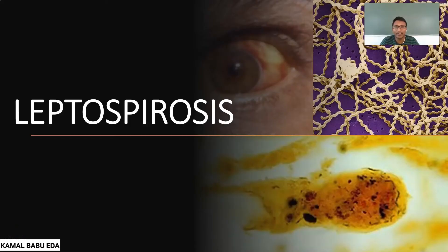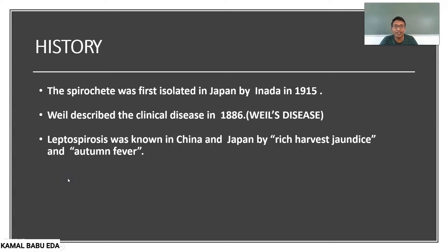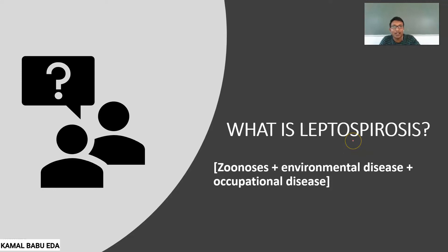Hello everyone. In today's topic, I would like to discuss leptospirosis. We'll mainly see the epidemiology of this disease, dealing with content mainly related to community health nursing. Coming to the history of this disease, it was first isolated in Japan by Mr. Inada in 1915, and Mr. Weil described the clinical disease in 1886, which is why leptospirosis is also known as Weil's disease. In China and Japan, it is called rice harvest jaundice or autumn fever.